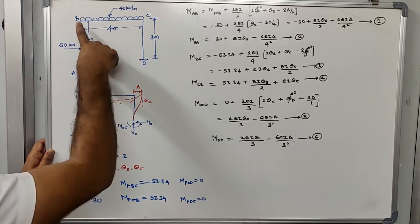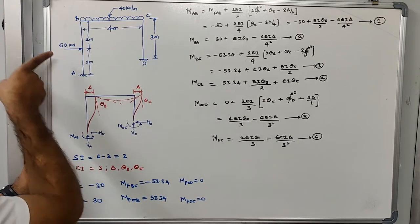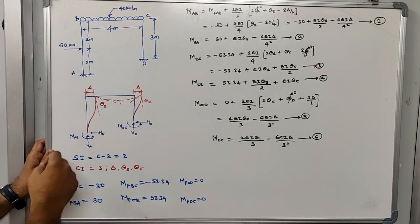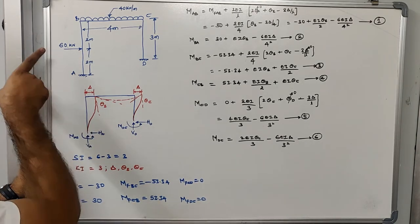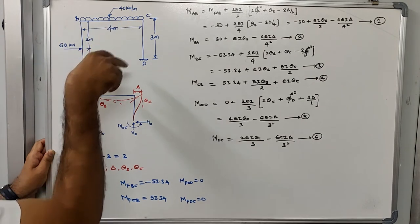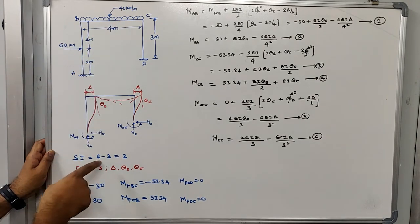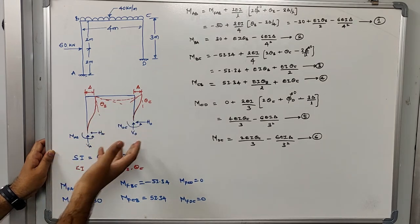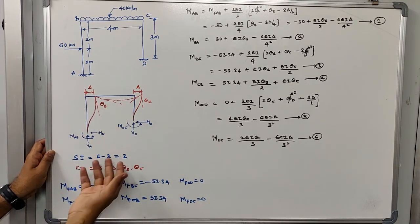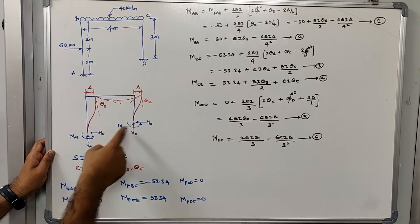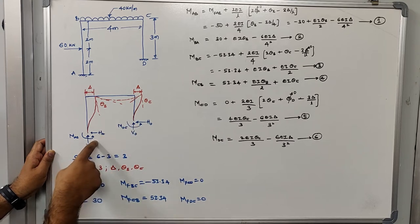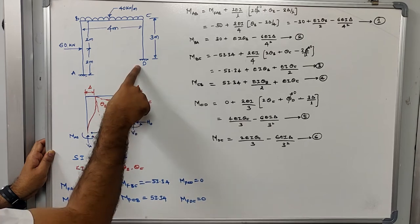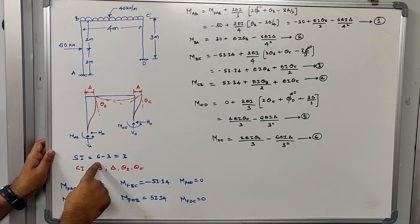From this frame it is very clear that it is supposed to sway because it has unequal legs and there is also a horizontal force being applied. We will first understand the static indeterminacy and kinematic indeterminacy of the structure. Three reactions are generated at support A and three reactions at support D, giving a total of six reactions.